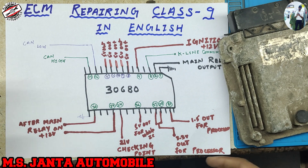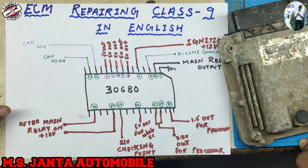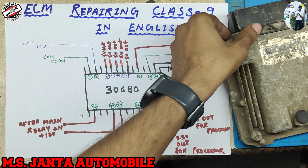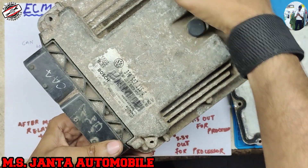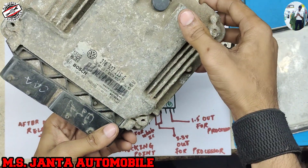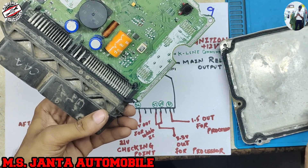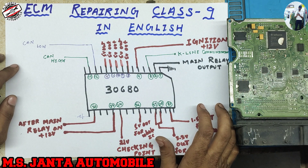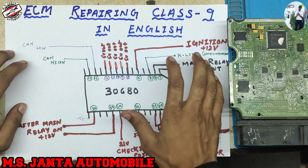Hello everyone, I am Ozil, welcome to my channel in English. In this video we will discuss about power IC number 30680. This IC is used in Skoda, Volkswagen, and Audi ECMs. It is commonly used in Bosch ECM for power distribution and low voltage regulating.